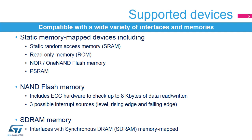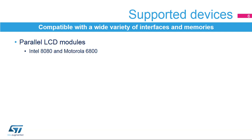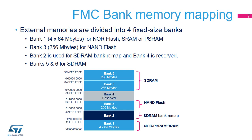The FMC also interfaces with synchronous DRAM or SDRAM memories and with parallel LCD modules, supporting the Intel 8080 and Motorola 6800 modes. The external memory space is divided into fixed-size banks of 256 megabytes each. Four external memory banks are dedicated to the FMC. Bank 1 is connected to the NOR PSRAM controller. Bank 3 is connected to the NAND controller, and Banks 5 and 6 are connected to SDRAM. Bank 2 is used for SDRAM bank remap, and Bank 4 is reserved.